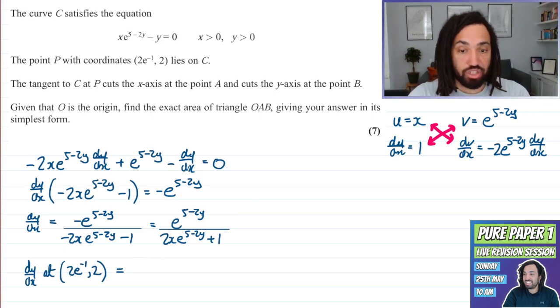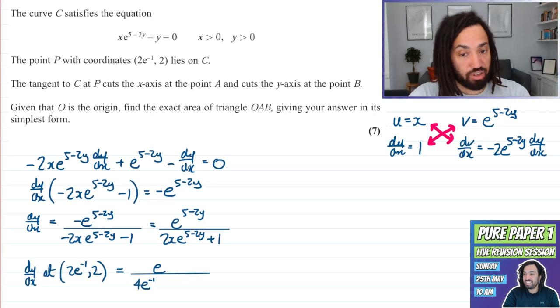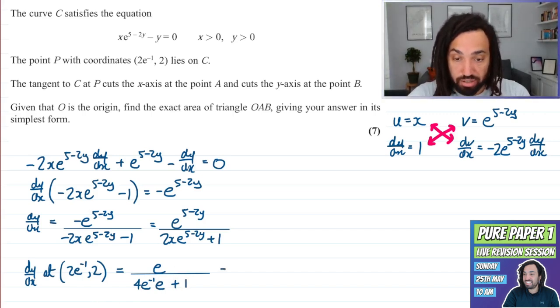So what is this going to give us? Well 5 minus 2Y when Y is 2 is 5 minus 4 which is just 1 so it's just E to the 1 so just E. We've got 2 lots of X so 2 lots of this is going to be 4 E to the minus 1 and then times by E to the 5 minus 2Y which is again just E and then we've got plus 1 here. Okay so E on top and we've got E to the minus 1 times E is just 1 so it's just 4 plus 1 on the bottom so it's just E to the 5. Perfect.